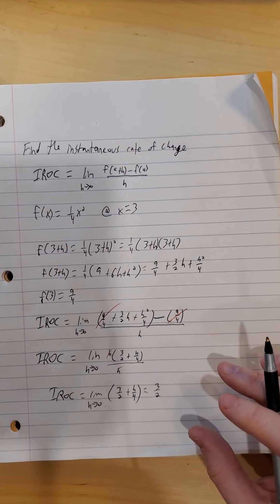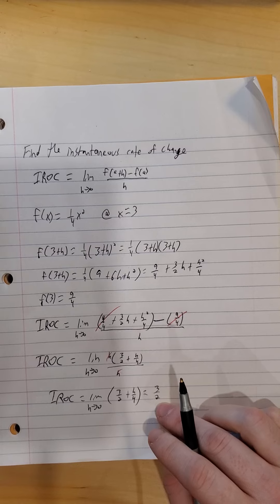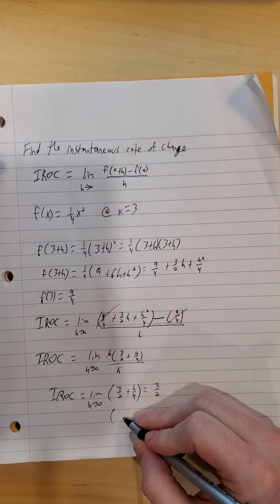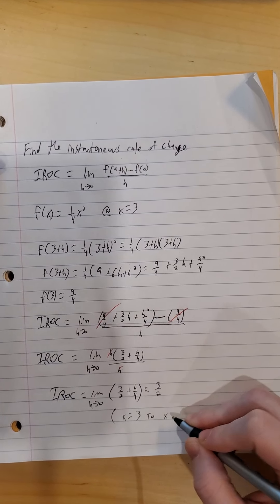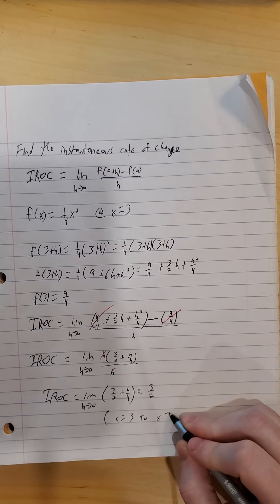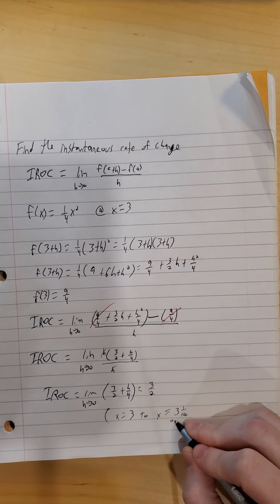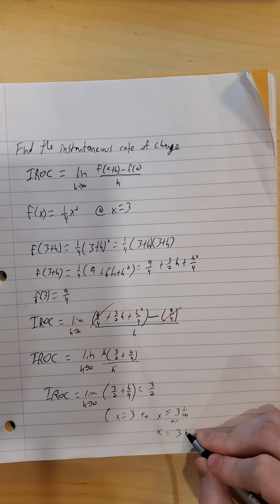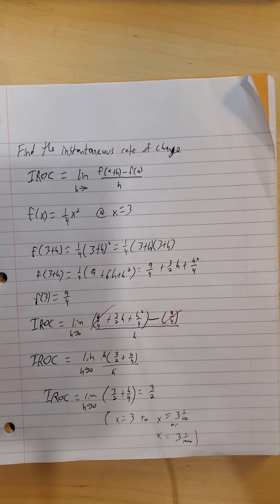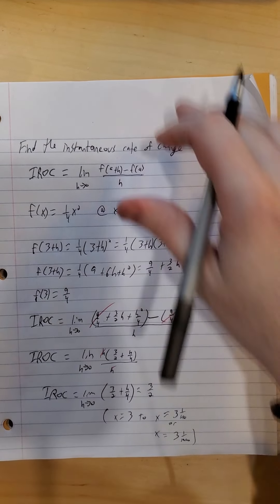Notice that the values from the previous page will start getting closer and closer to that value of 3/2. You can try using the average rate of change method from x equals 3 to, say, x equals 3.01 or x equals 3.001, and you'll see the results get closer and closer to the instantaneous rate of change of 3/2 when x equals 3.